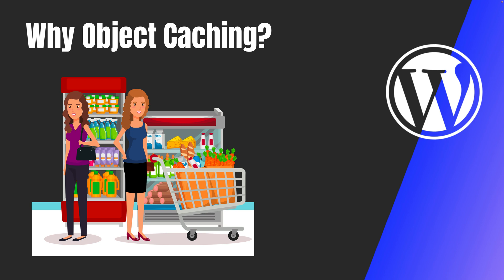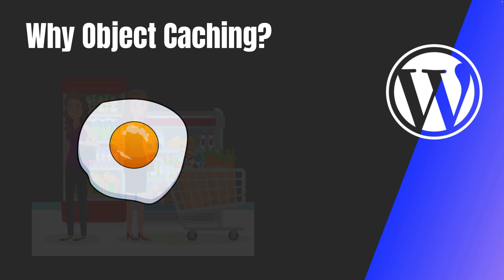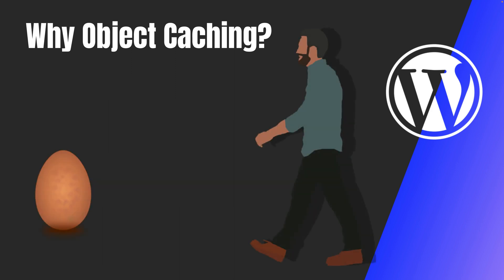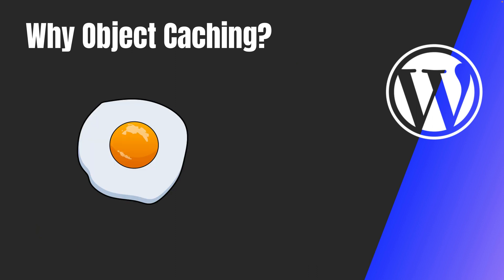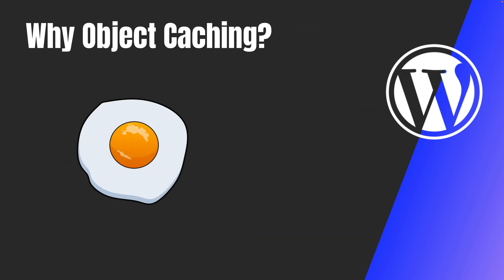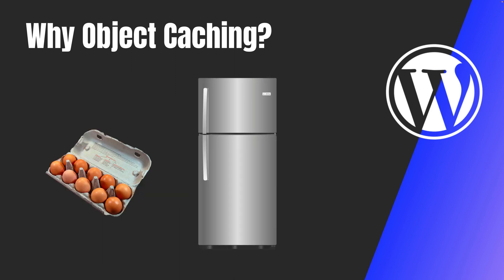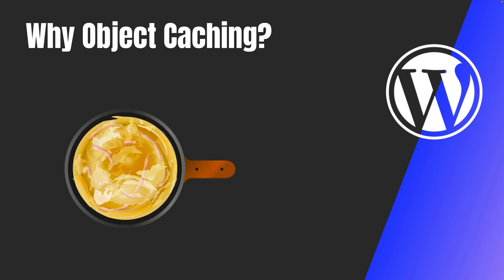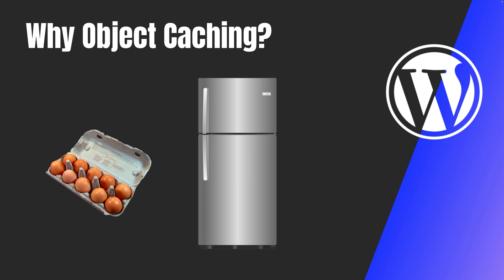To give you a simple example to understand object caching, you can think of it like grocery shopping. Let's say you want to make an omelet every day. Imagine you have to go to the shop, get one egg every day, come back home, and make the omelet — then do the same thing again the next day. That feels inefficient, right? Wouldn't it be easier to just get a dozen eggs, put them in the fridge, and use them whenever you need to make a meal? That saves multiple round trips because you'd be repeating the same process over and over.